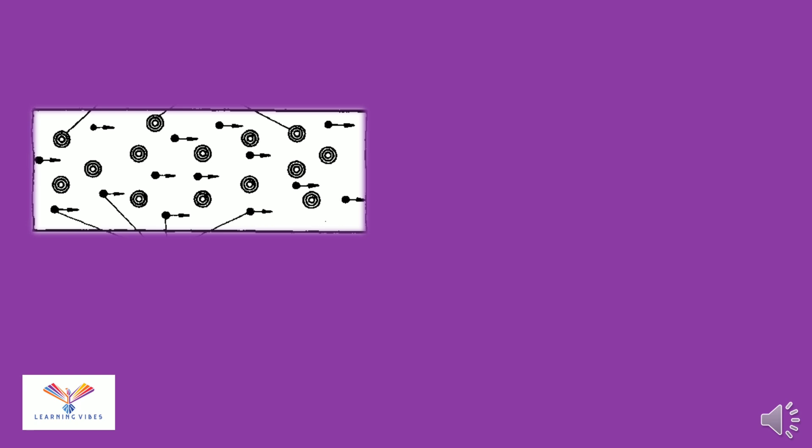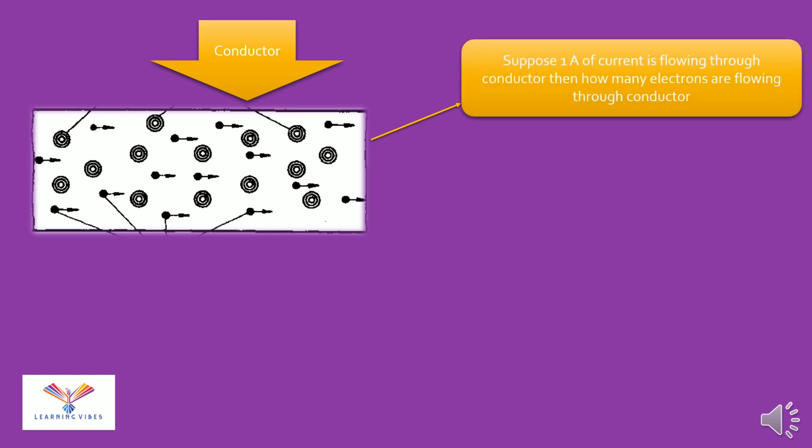Now this is a conductor. We have seen what is 1 ampere. We have also understood that flow of electron is current. But can you tell me that if current of 1 ampere is flowing through conductor, then how many electrons are exactly flowing through conductor? We have talked that electrons are flowing through conductor and we can call it as a current.